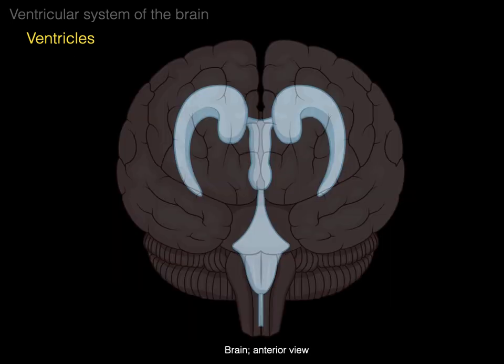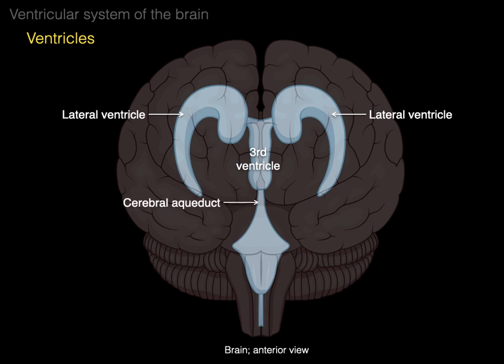Let's look at an anterior view. Those two things that look like ram's horns are the lateral ventricles. They then, through the interventricular foramen, give rise to the third ventricle between the two diencephalons. The third ventricle, through the cerebral aqueduct, goes into the fourth ventricle. Something important to observe is that CSF coming from the two lateral ventricles and the third ventricle — the only way into the fourth ventricle and into the subarachnoid space is through that cerebral aqueduct. If you block that cerebral aqueduct, all the CSF in the two lateral and third ventricles gets blocked and occluded. The fourth ventricle then communicates to the subarachnoid space through its lateral apertures.